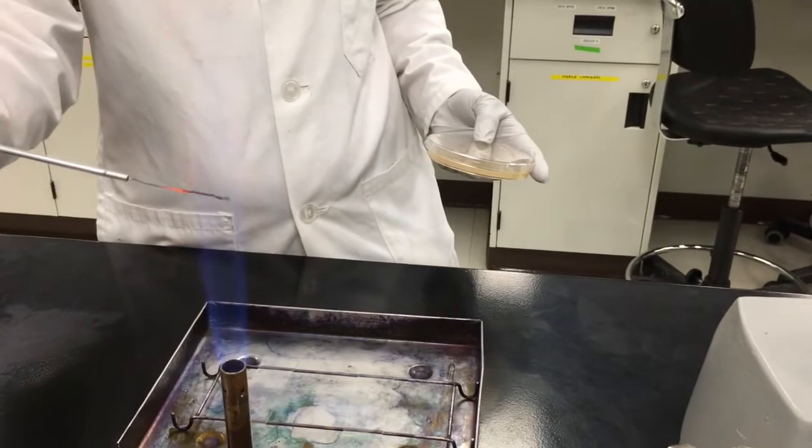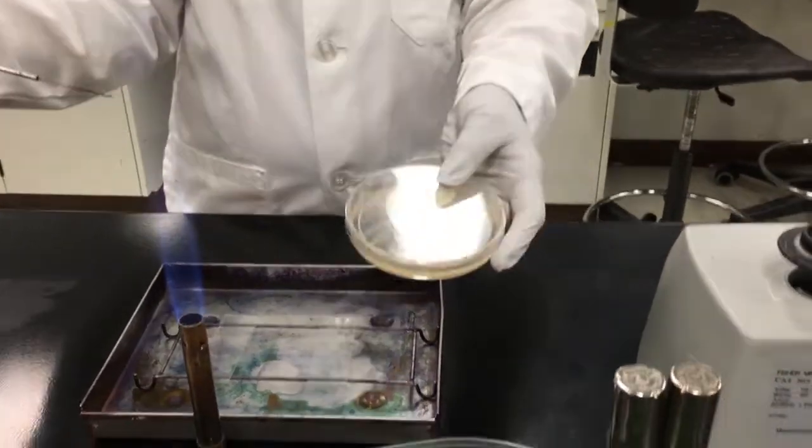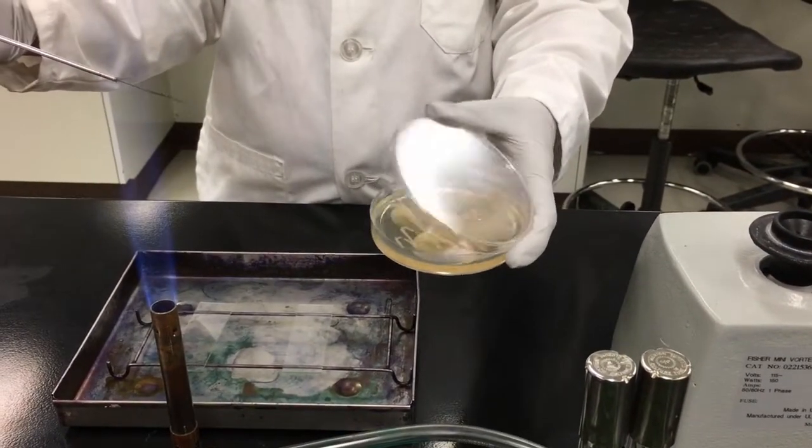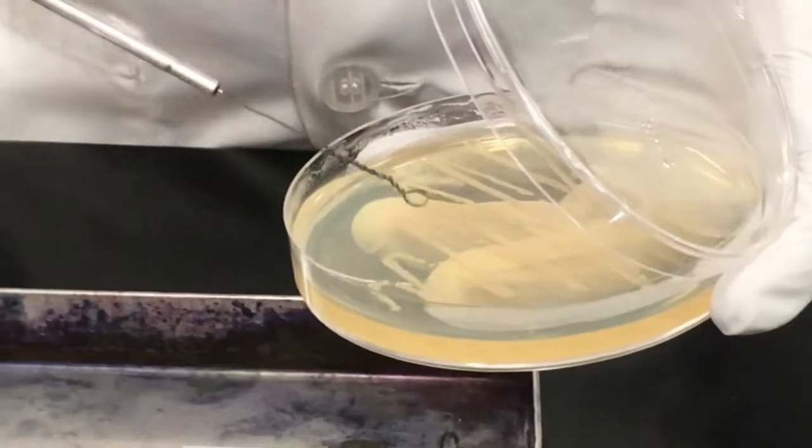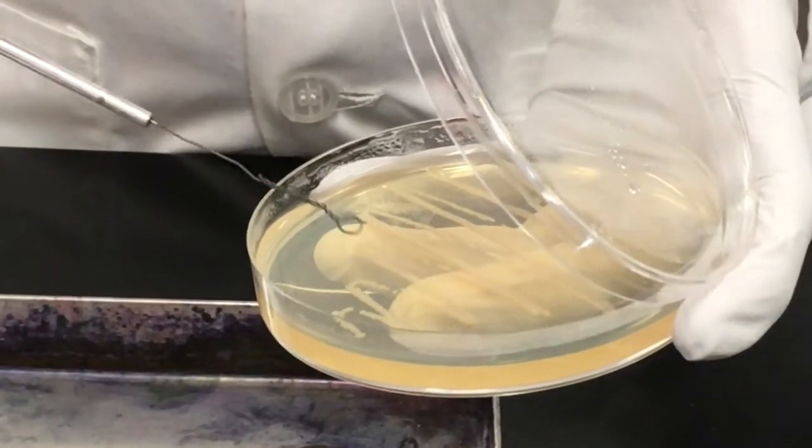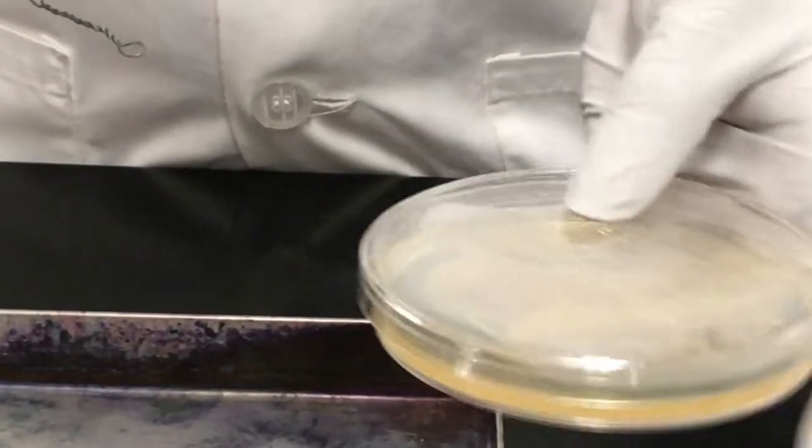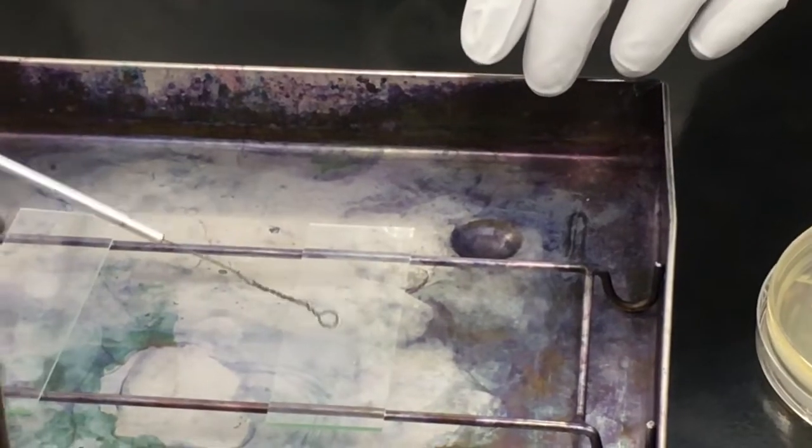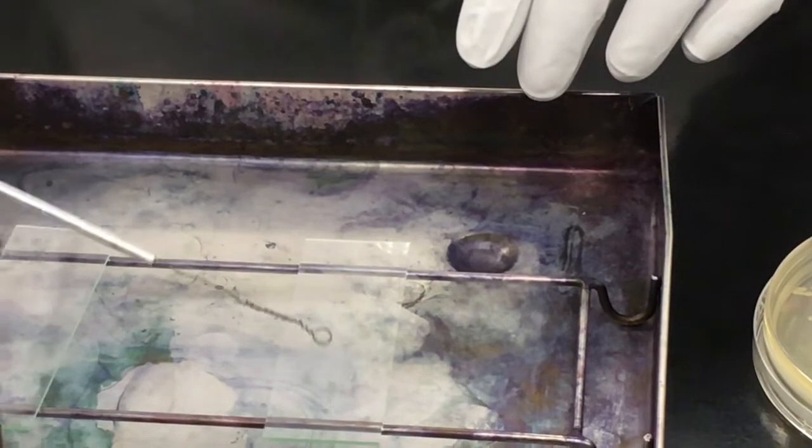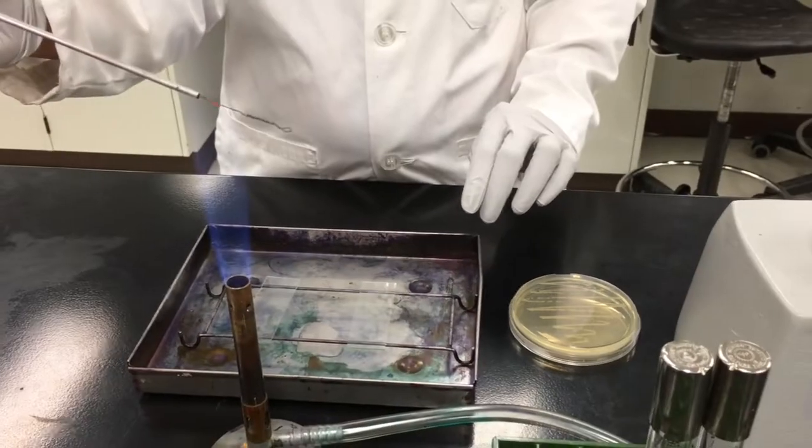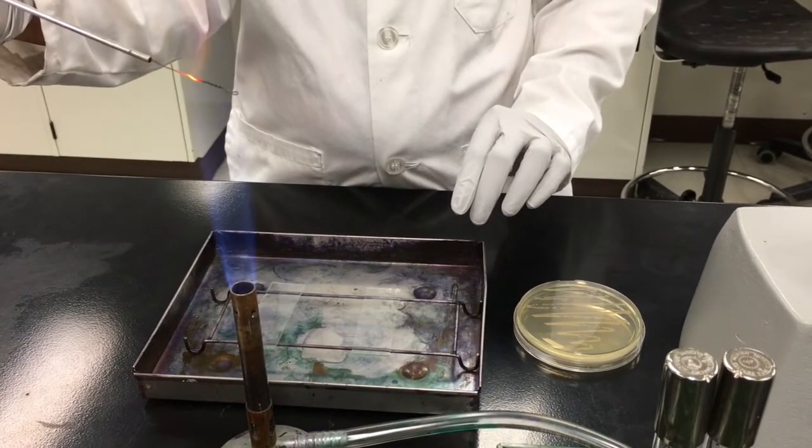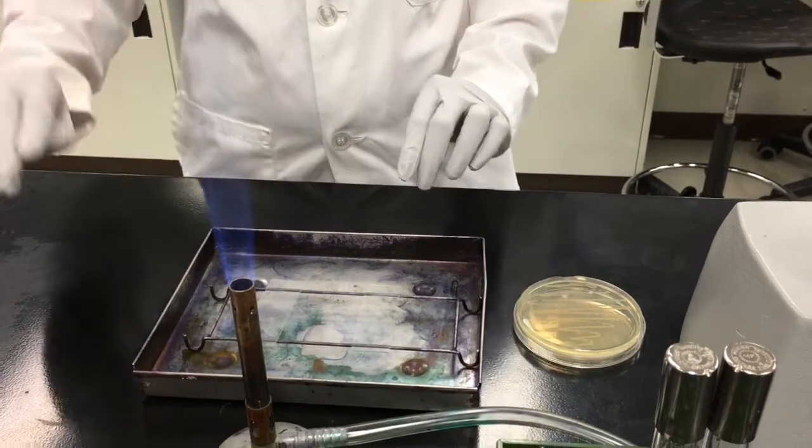We then re-sterilize our loop and open the petri dish containing our bacterial culture very gently. Once the loop is cool, we gently touch the bacterial culture taking just enough for visualizing under the microscope. You should not see a large amount on your loop. Spread this around on top of the slide in the distilled water and re-sterilize your loop prior to placing back on the bench top.